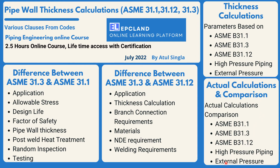In the end, we'll compare the various parameters governing the pipe wall thickness calculation and how these parameters differ across all three codes. This is going to be a very informative session with respect to codes. We'll first understand the differences between codes so that we can grasp a few of the parameters in advance. So this is the whole agenda — let's start with the course.